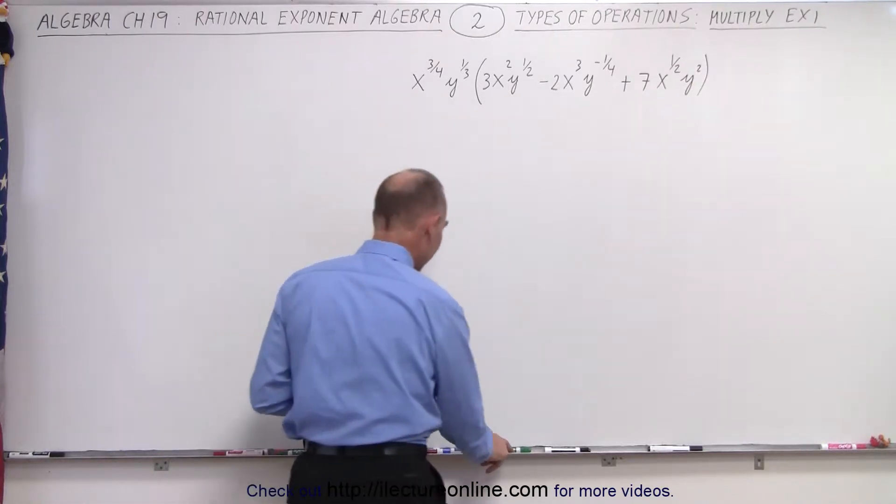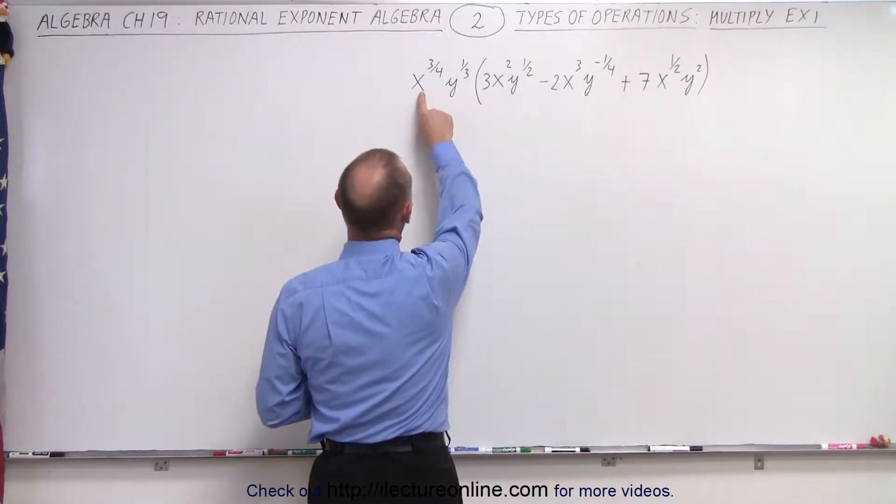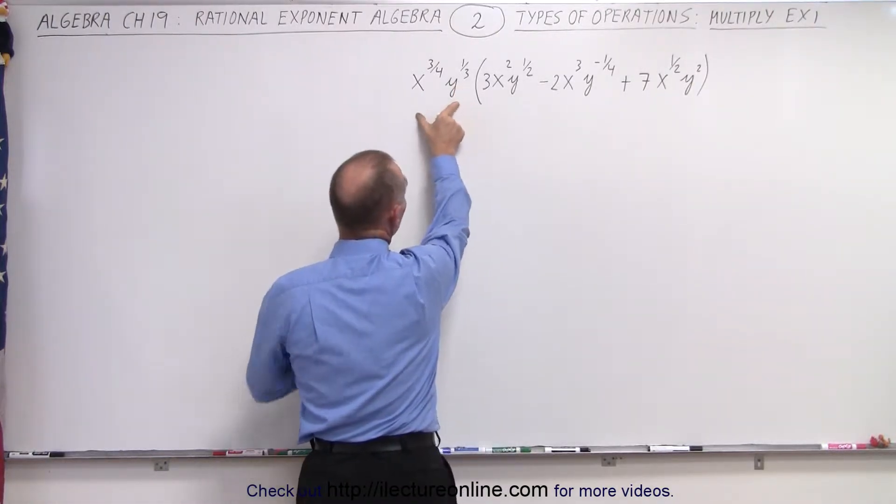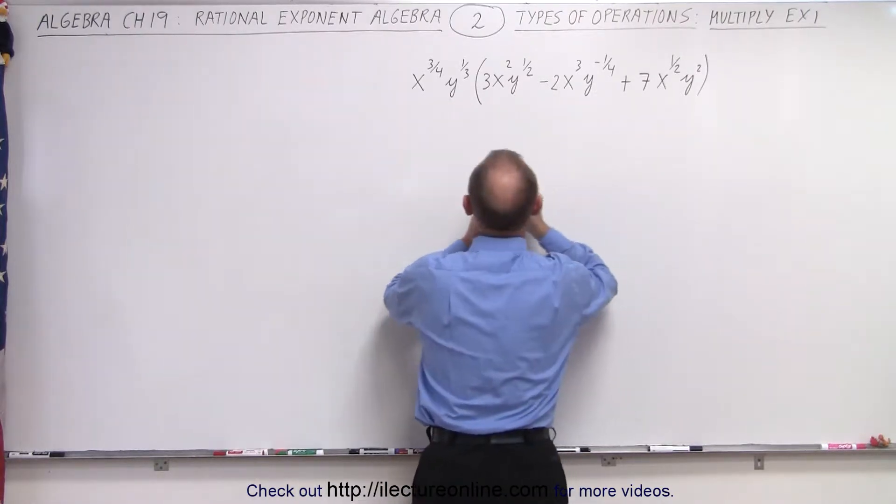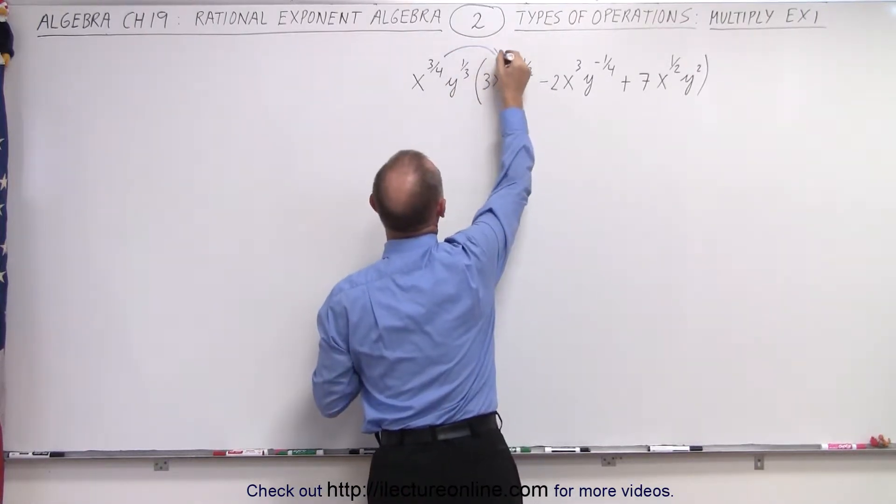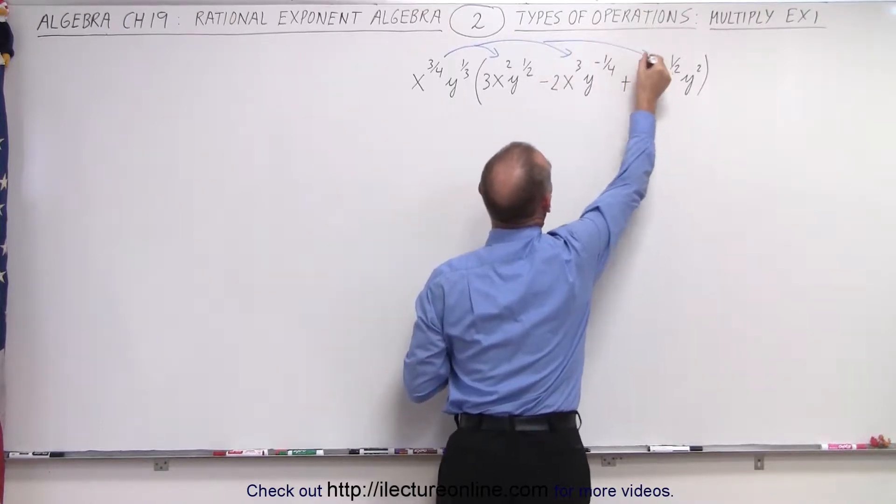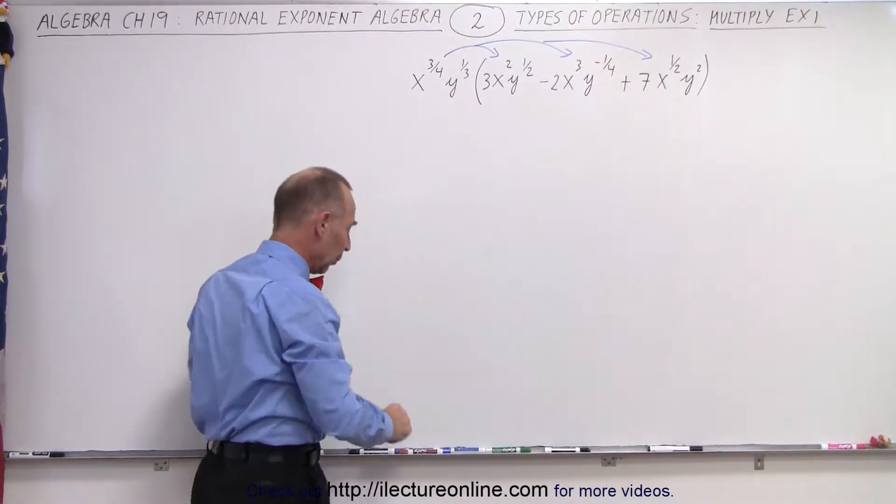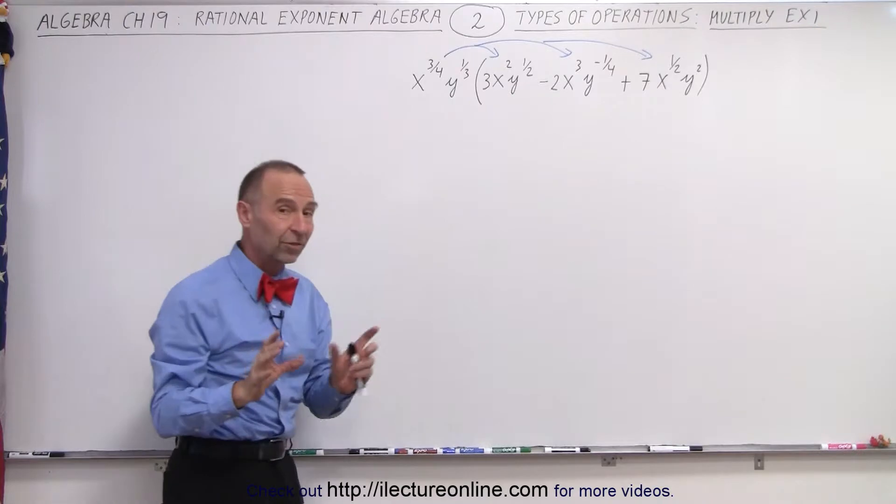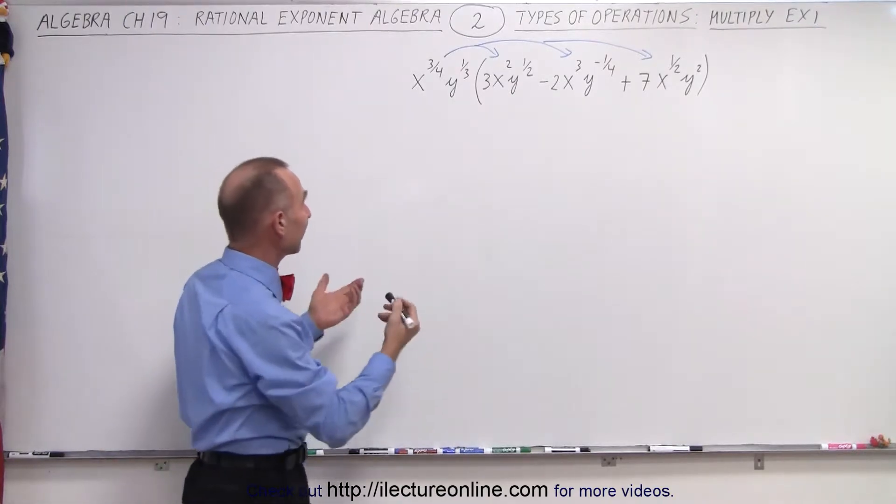All right, so here we have a product of x to the three halves y to the one third multiplied times a trinomial, which means we're going to take this and multiply it times each of the three terms inside the parentheses one at a time. And remember, if the bases are the same, we add exponents and that's the key.